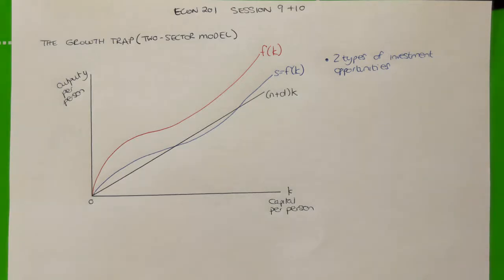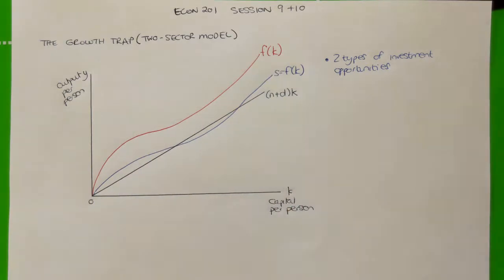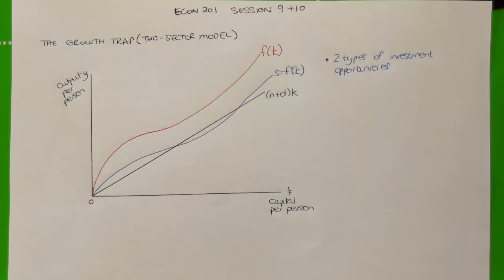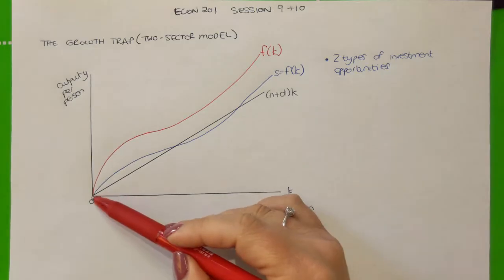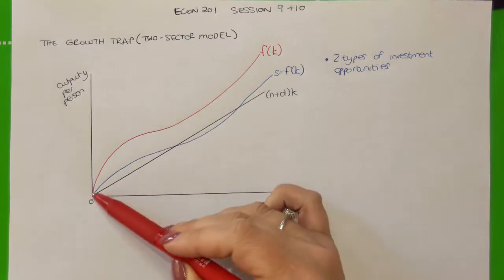What is quite different in this model is that both the shape of the production function and the shape of the related savings function don't look like neoclassical growth theory alone or endogenous growth theory alone. The growth trap model combines elements of both, recognizing that when countries are initially in their growth phase, they might start out investing in physical capital stock — an investment opportunity characterized by diminishing marginal returns.